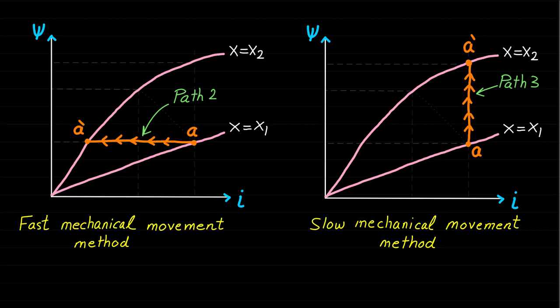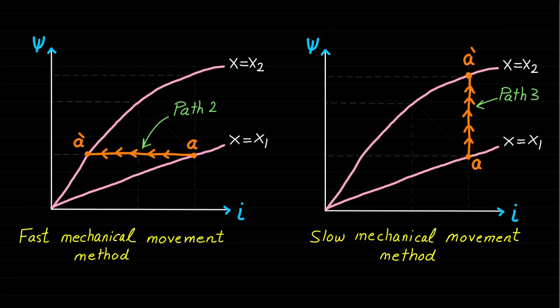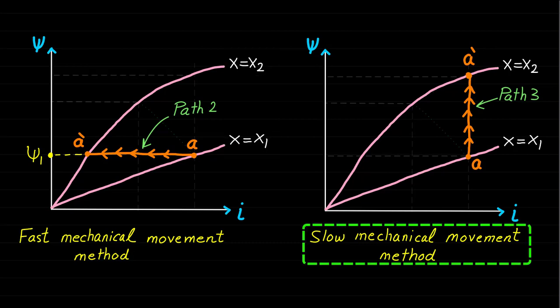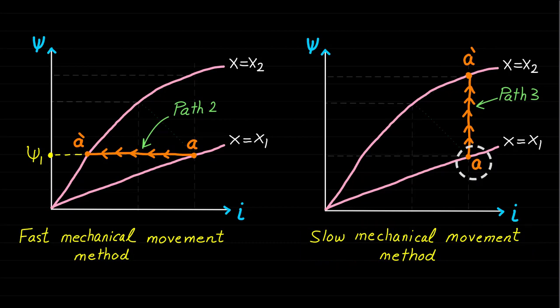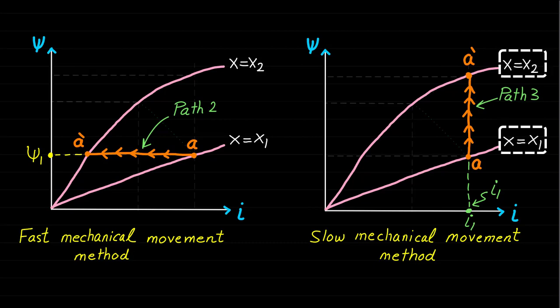The first method represents the fast mechanical movement from A to A-dash, which happens under constant magnetic field linkage ψ₁ during the movement from curve X1 to curve X2. The second method represents the slow mechanical movement from A to A-dash, which happens under constant current I1 during the movement from curve X1 to curve X2.